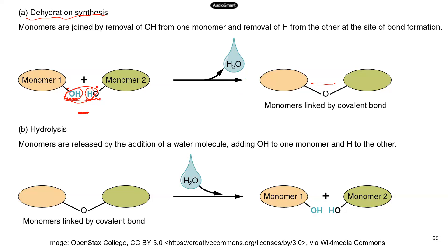In terms of hydrolysis, it's really just the reverse of dehydration synthesis. The two monomers are holding hands — when you break that bond, free electrons become available. Those free electrons make the monomers unstable, so water steps in and provides a hydroxyl group and a hydrogen ion to absorb those free electrons, stabilizing the two monomers.